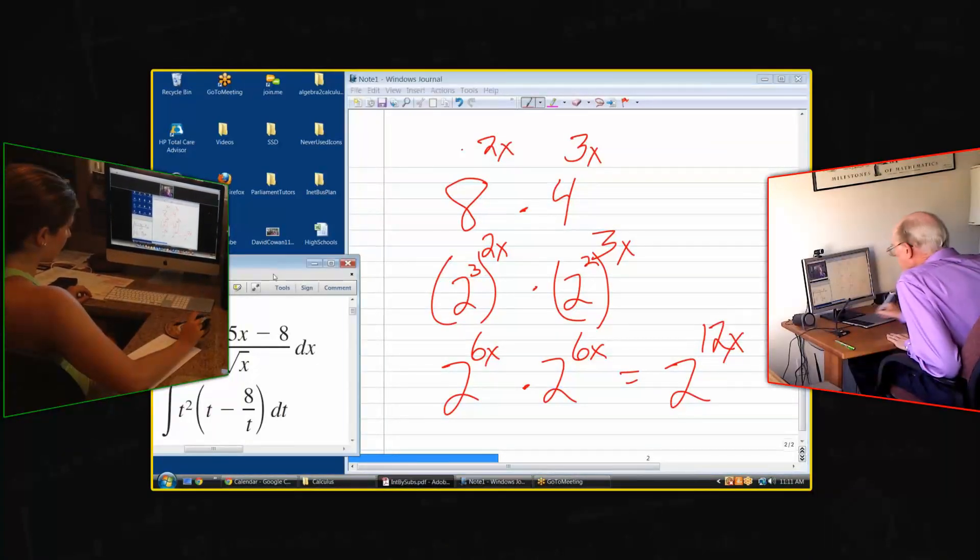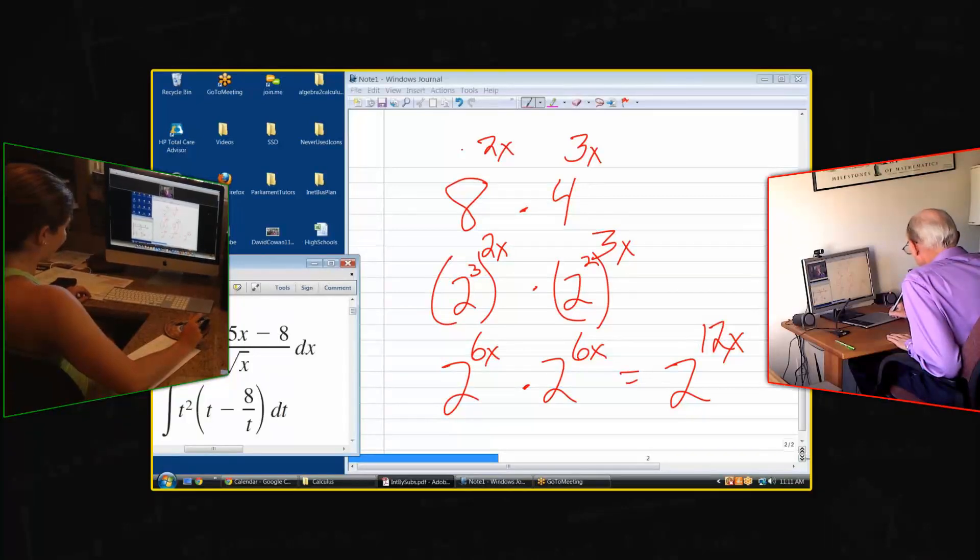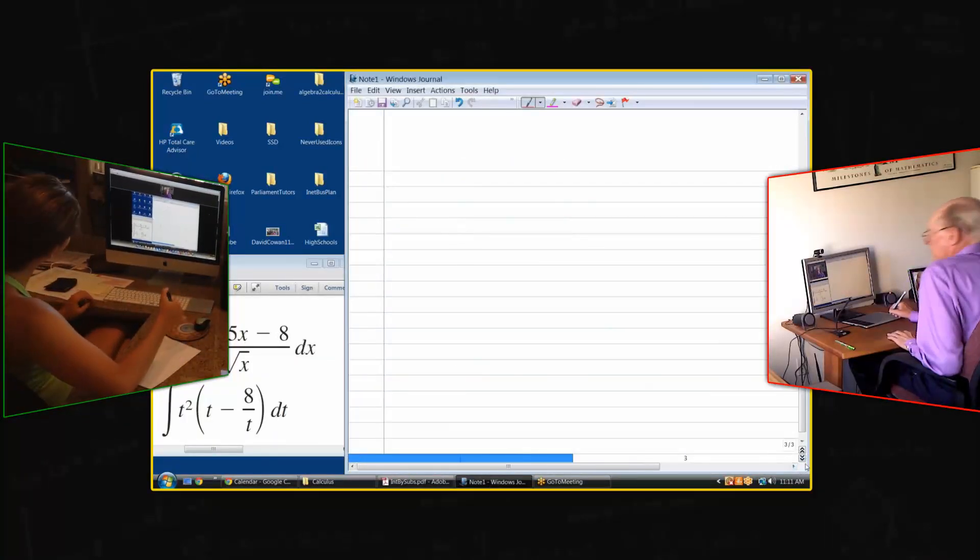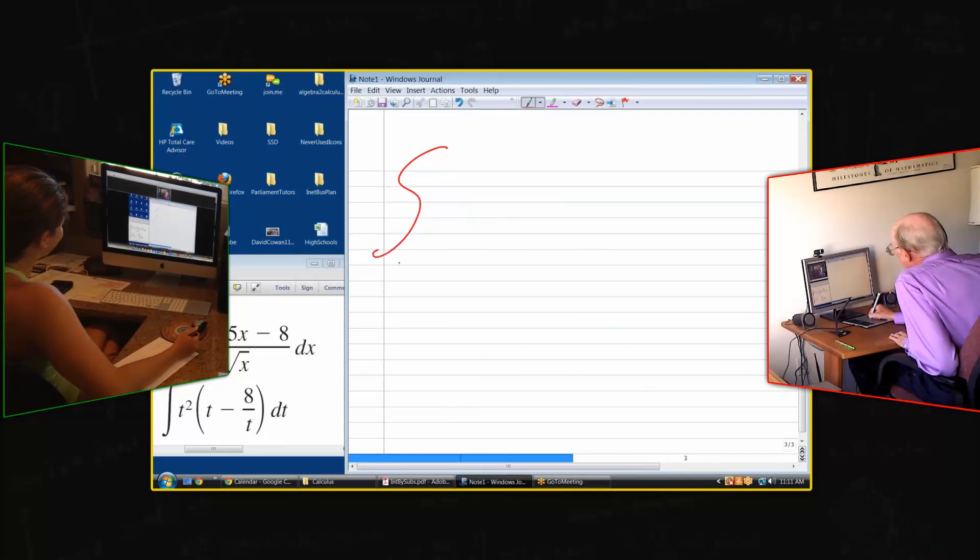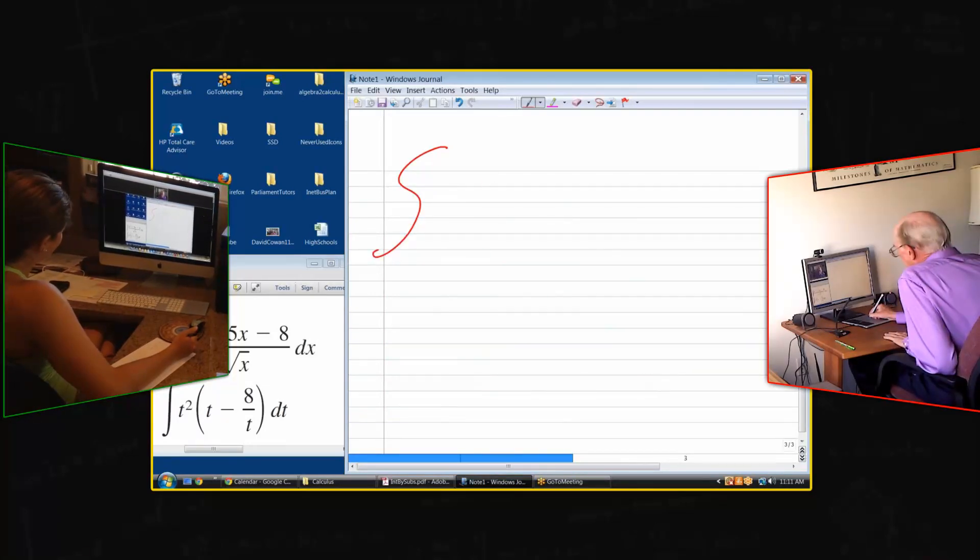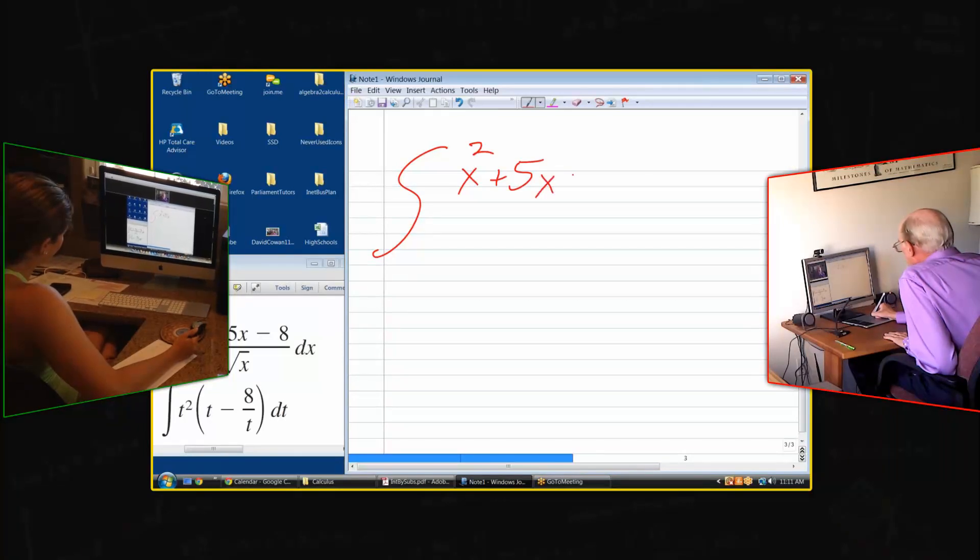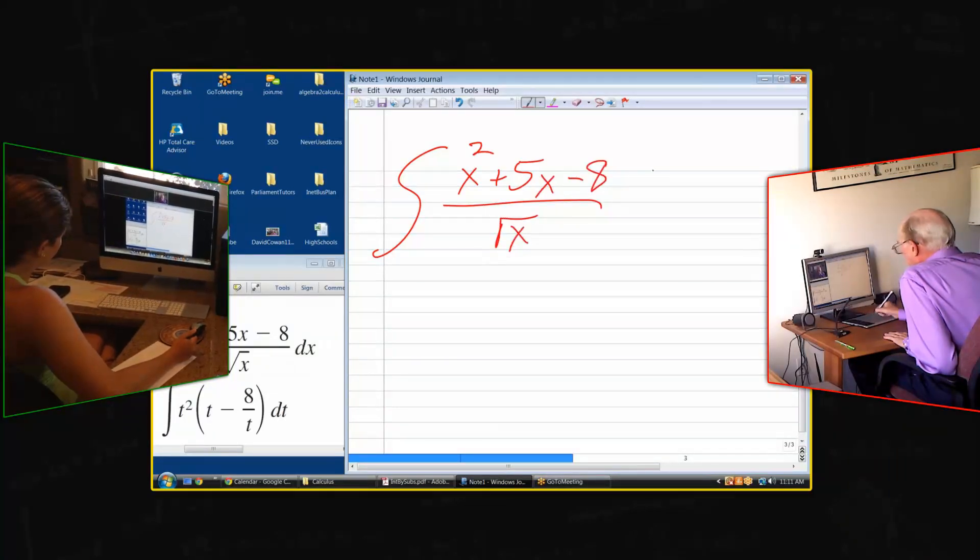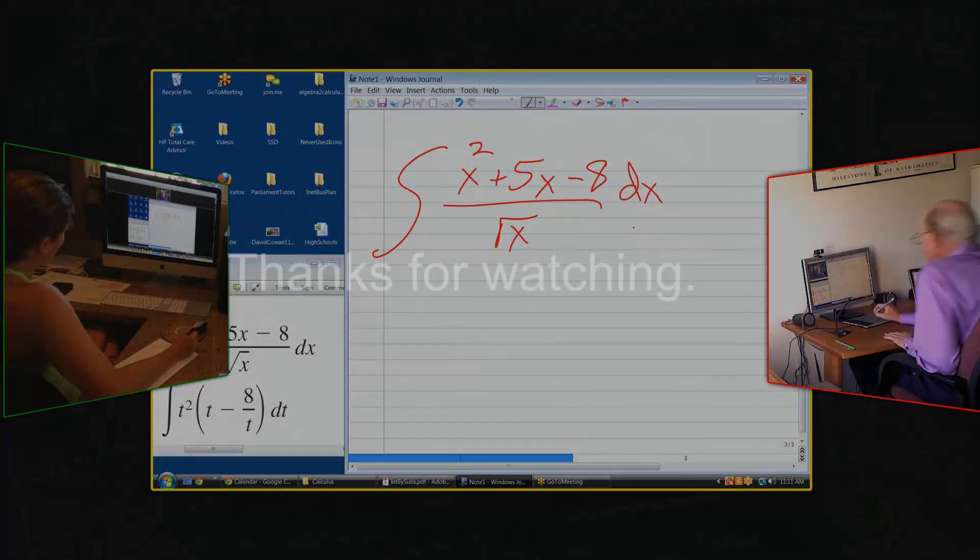Okay, let's have a look at this integral over here. The integral of x squared plus 5x minus 8 divided by square root of x dx. What's the first step?